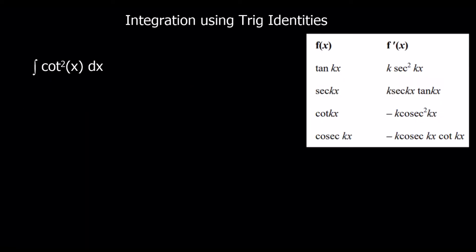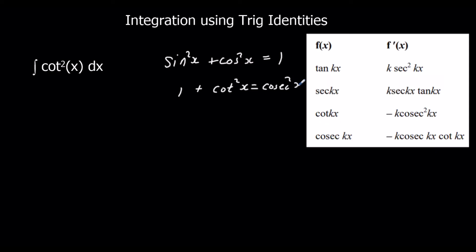Cot squared x is another one I can't integrate directly, but I can change it using a trig identity. Starting from sin squared x plus cos squared x equals 1, if I divide through by sin squared x, that gives me 1 plus cot squared x equals cosec squared x. And I can integrate cosec squared x. Subtracting 1 from both sides gives cot squared x equals cosec squared x minus 1.